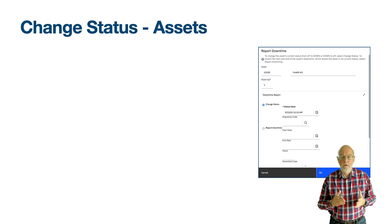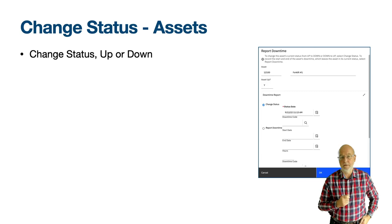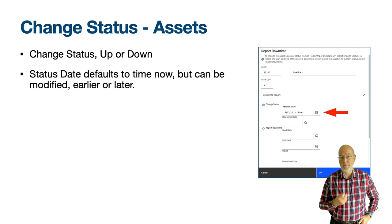Use Change Status when you have been alerted to a change in Asset state. Use Report Downtime when you are recording Downtime retrospectively, perhaps from the notes made on an operator's clipboard. The default is to Change Status and on pressing OK it toggles to the opposite state, down in this case. The status date — the date and time when the asset's Is Running state was known to have changed — defaults to date and time now but it can be changed to an earlier date time. It can also be set to a later time if you know the asset is due to be stopped at a specific time.